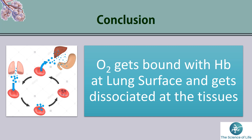Conclusion: O₂ gets bound with hemoglobin at the lung surface. As seen in the diagram, the blue dots represent oxygen which diffuses into RBCs in the lungs, and later this oxygen is released and dissociated towards the organs and tissues.